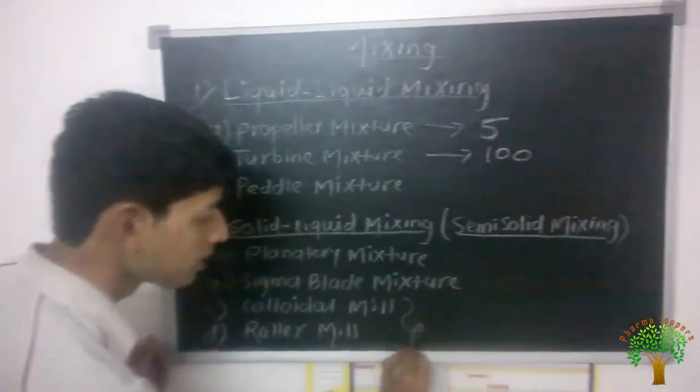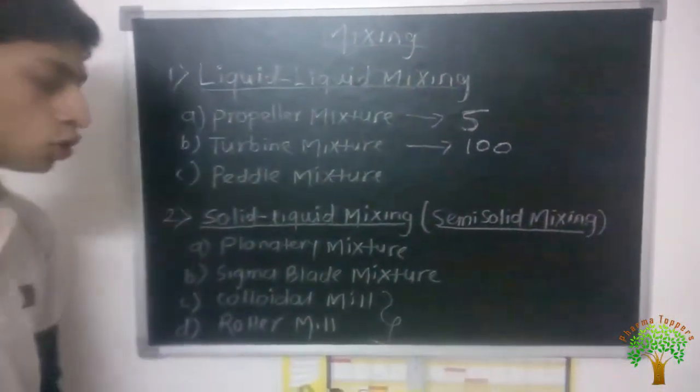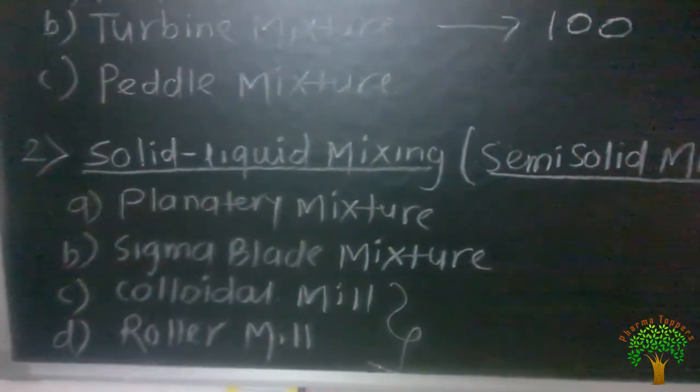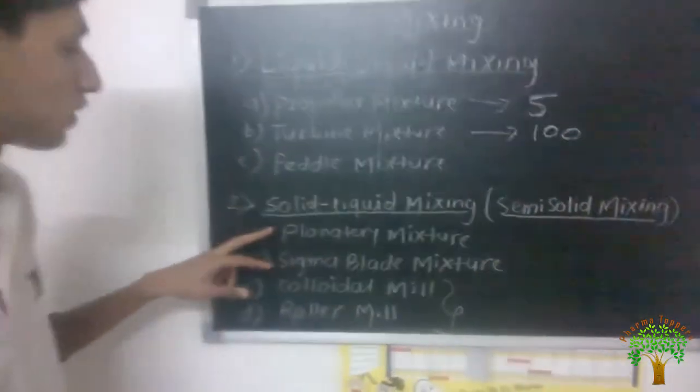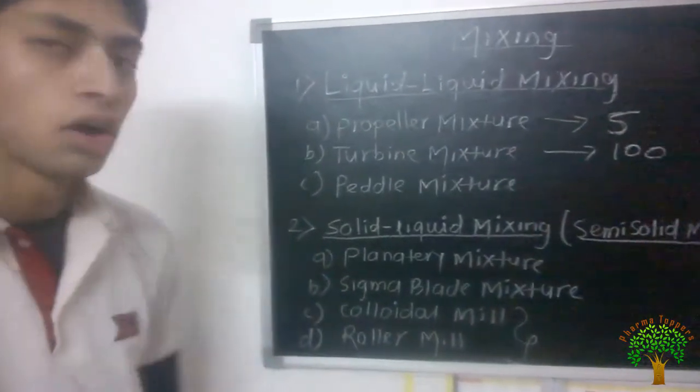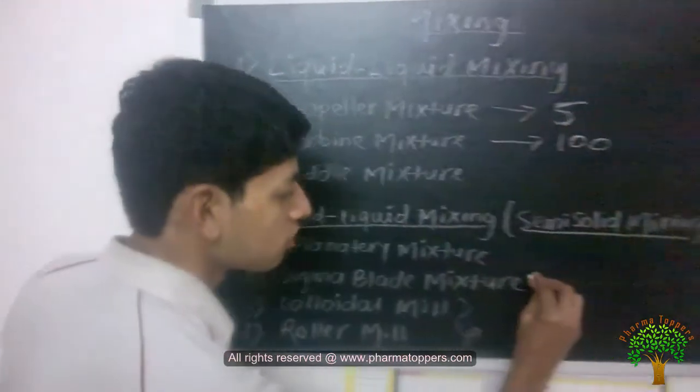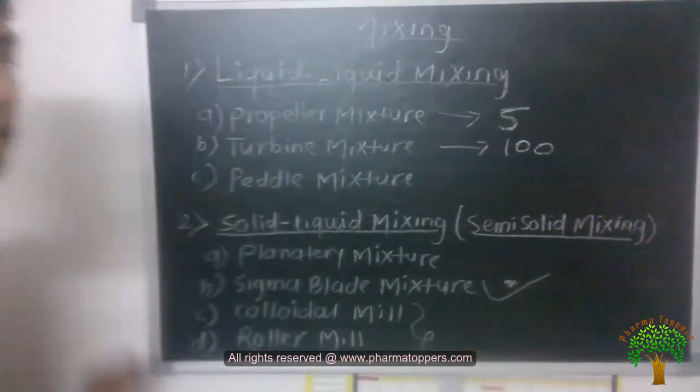Apart from that, these two mills are used in both purposes: size reduction as well as mixing. While in case of these first two methods are only useful for the mixing purpose only. In that, sigma blade mixture is most widely useful.